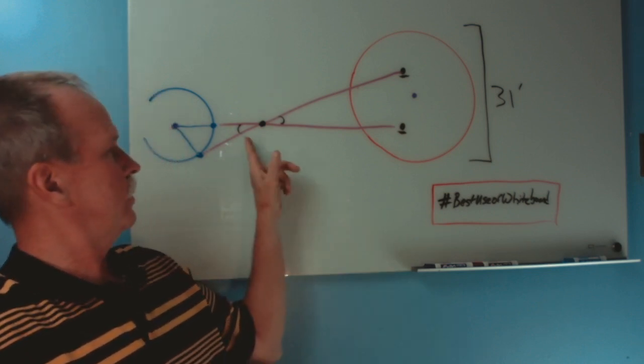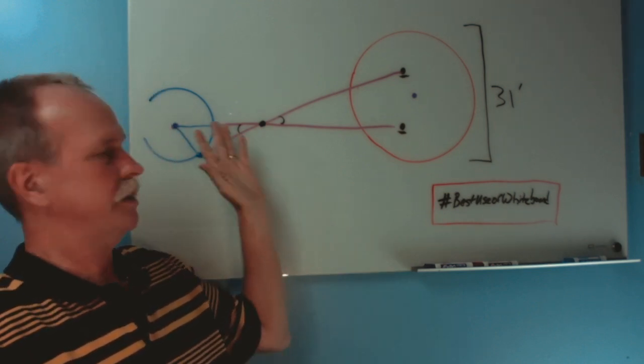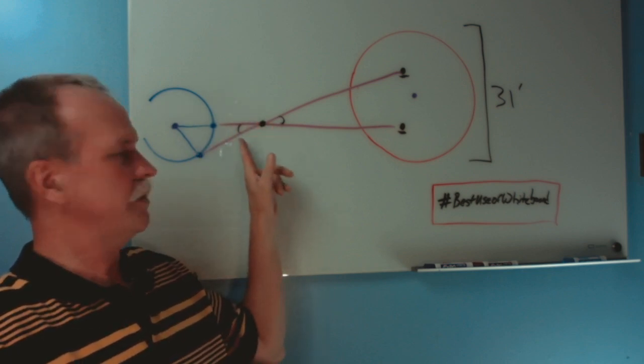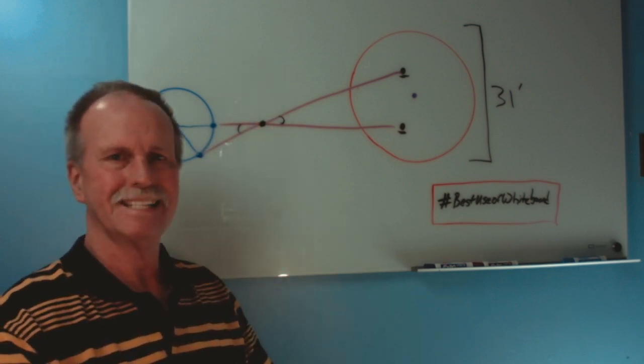So now we've got a triangle, and we know one angle. We don't know the length of any of these sides, but we know that angle. So can we get a side?